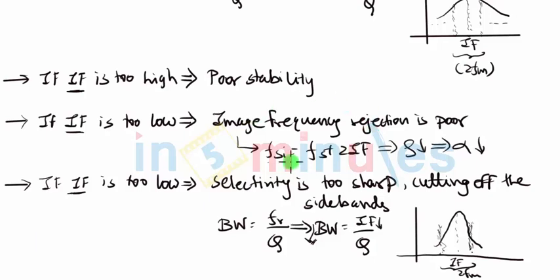It cannot be too low for reasons like image frequency rejection will be poor, selectivity will be too sharp, etc. Hence, considering all these factors, IF is chosen to be below the tuning range, that means less than 540 kHz, but also not a very small value compared to 540 kHz.